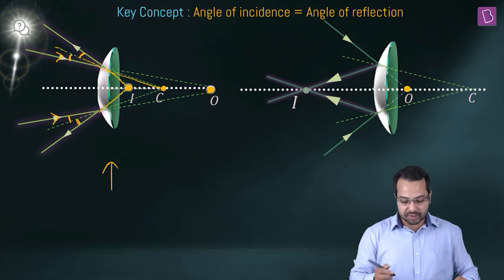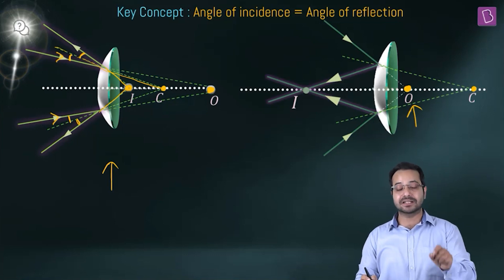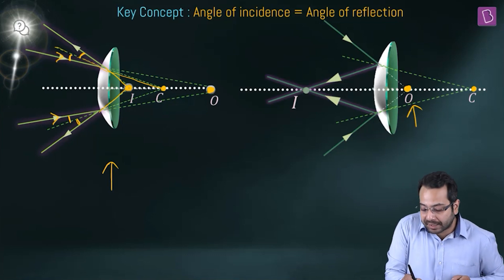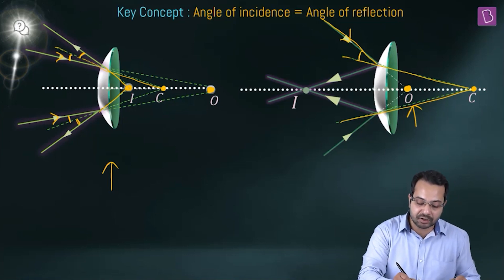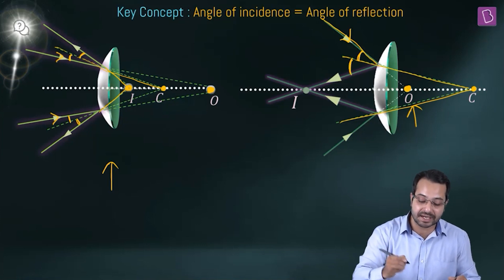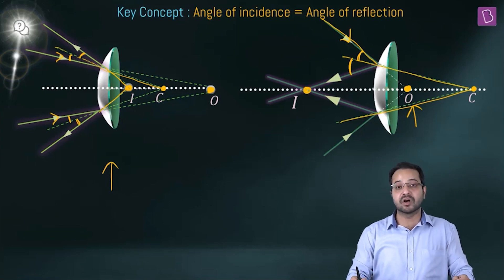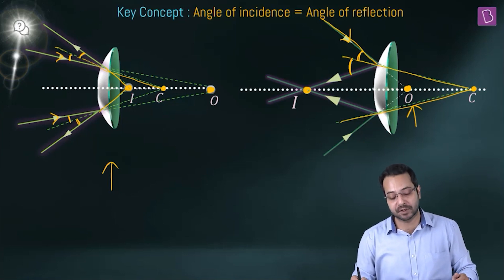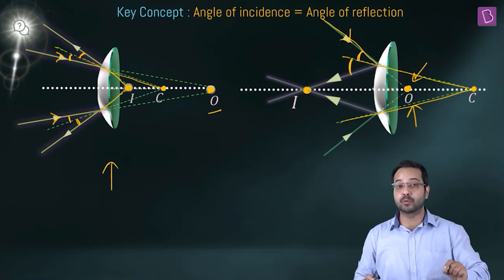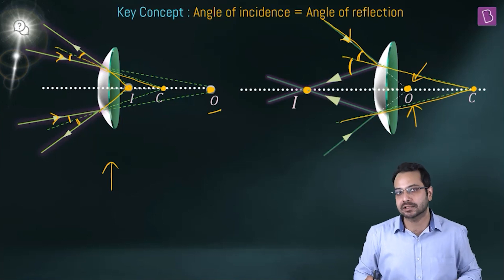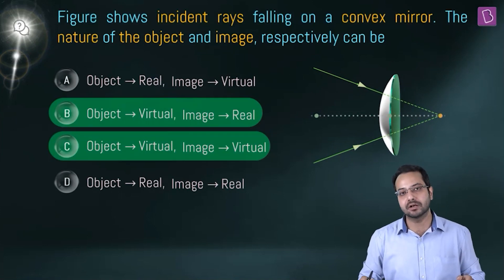If the virtual object is to the left of the center of curvature, the angle of reflection sends the ray to actually meet at a real point — giving a real image. So depending on whether the object is to the right or left of the center of curvature, the image can be virtual or real. Both options B and C are correct.